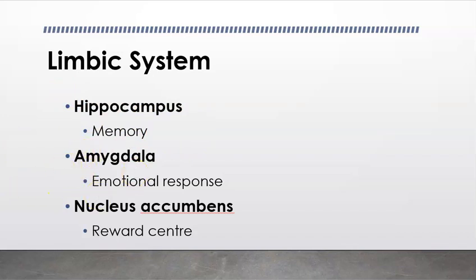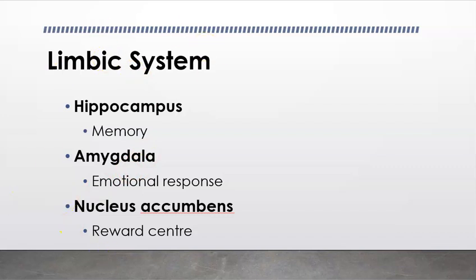The amygdala is key in emotional responses. A mnemonic: split it into 'Amy' and rearrange the rest to get 'Amy's glad' — that's an emotional response. The nucleus accumbens is the reward center of the brain. These are all great brain areas for creating glossary terms.